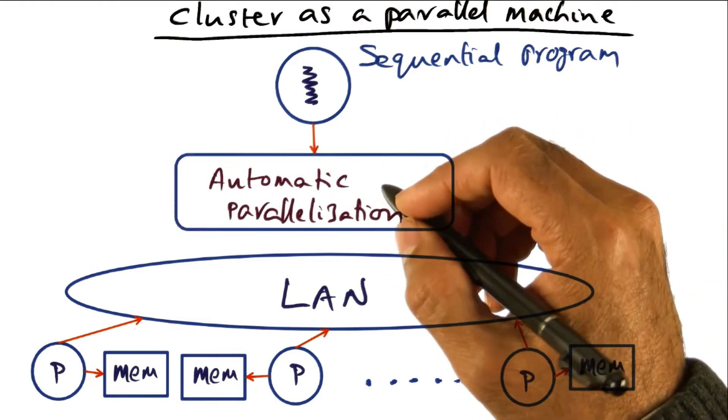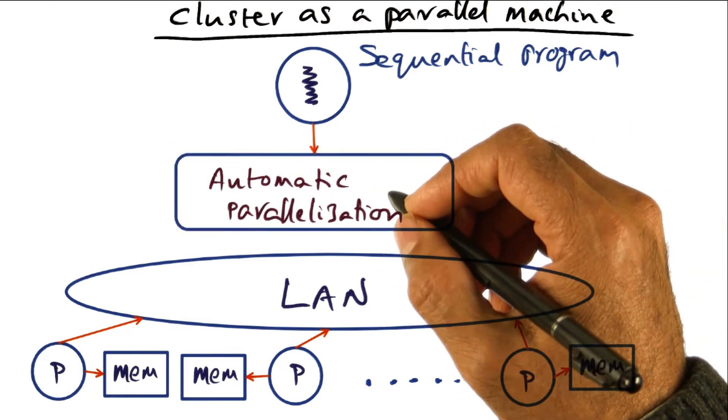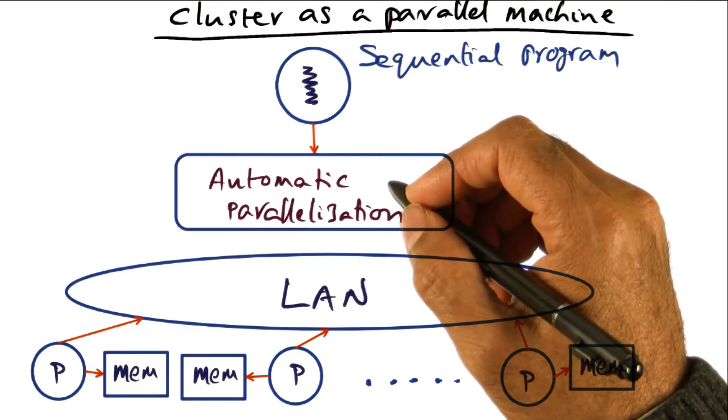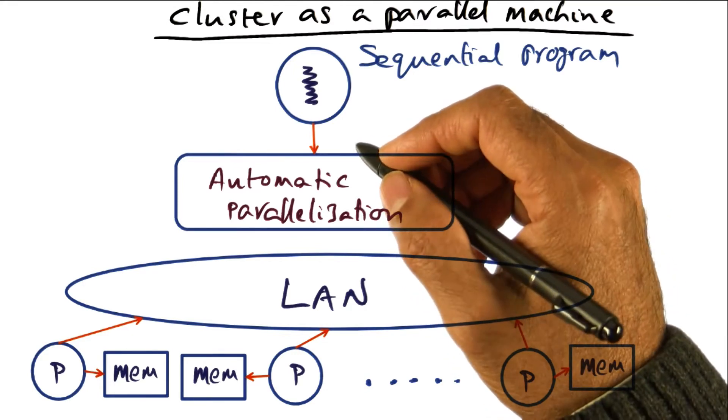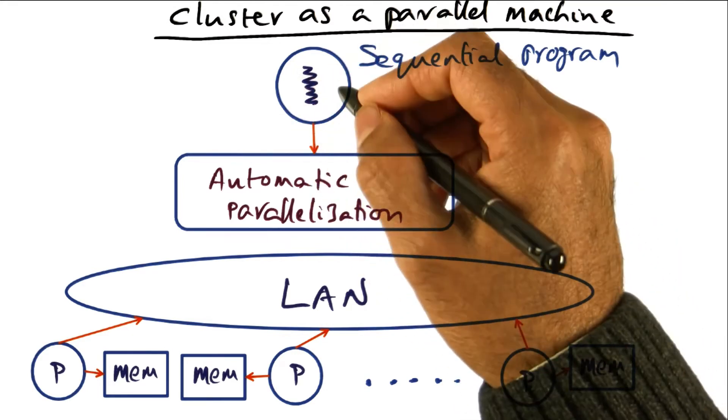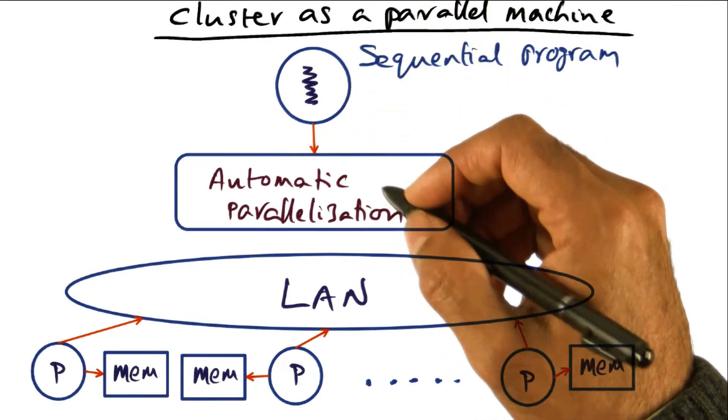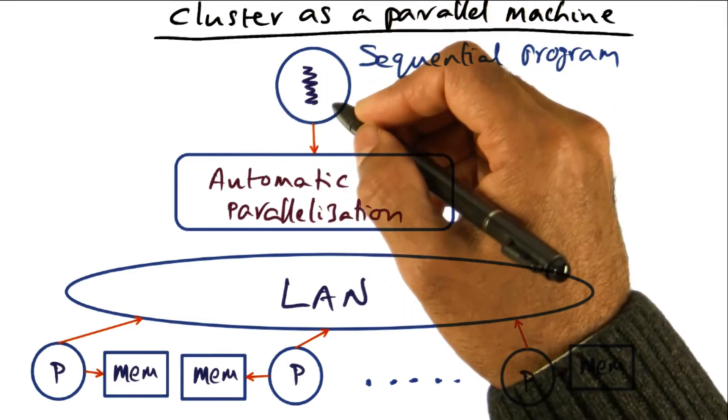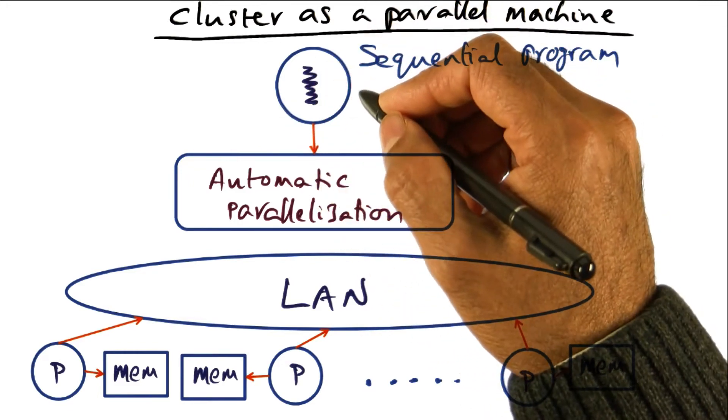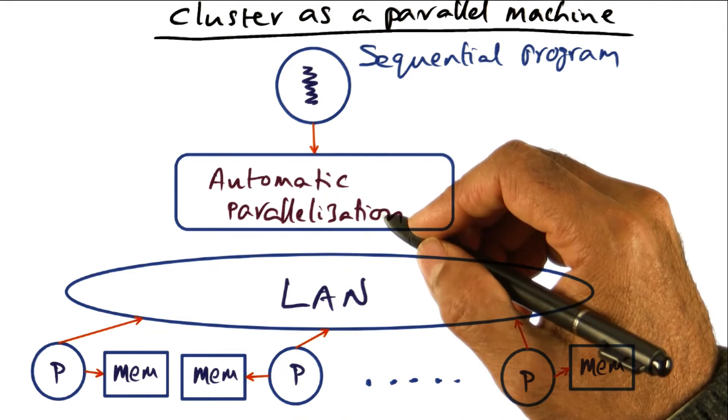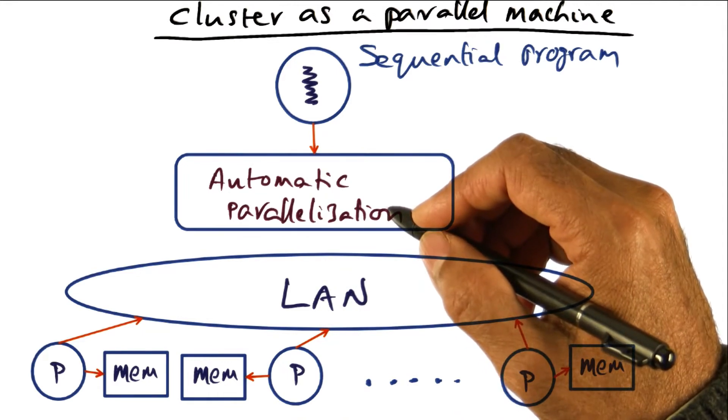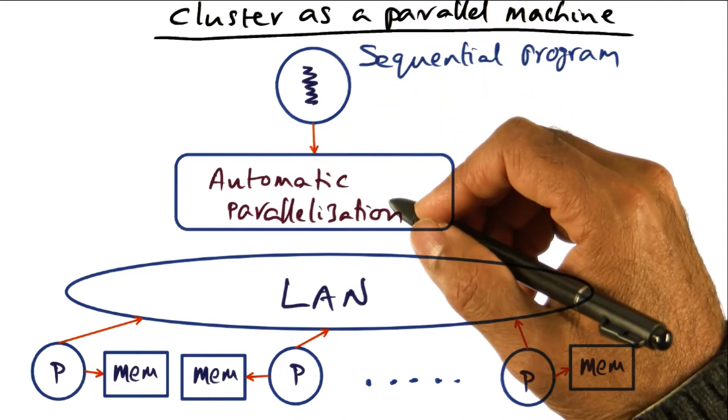One possibility is to do what is called automatic parallelization. That is, instead of writing an explicitly parallel program, we write a sequential program and let somebody else do the heavy lifting in terms of identifying opportunities for parallelism that exist in the program and map it to the underlying cluster. And this is what is called an implicitly parallel program.